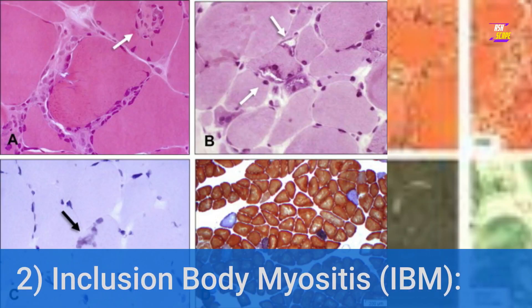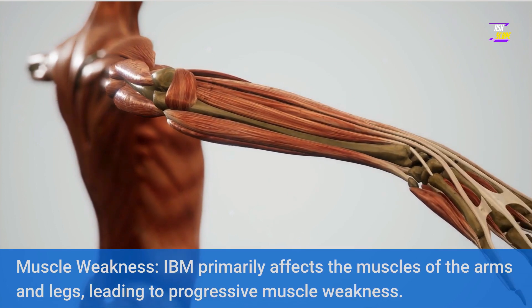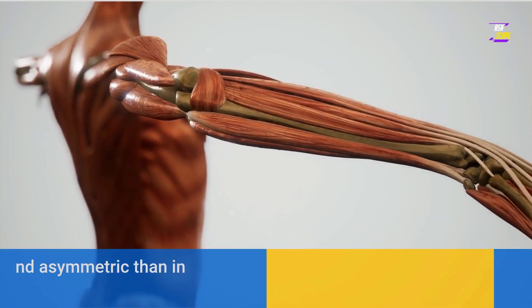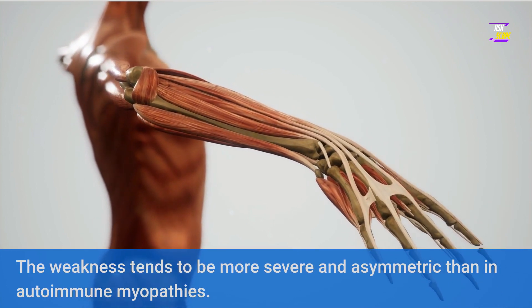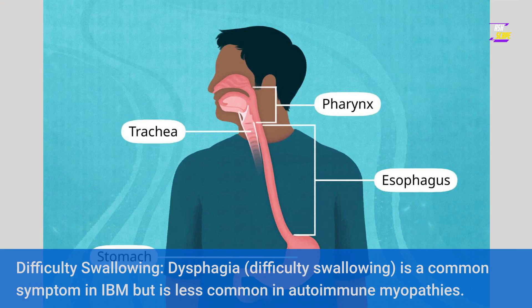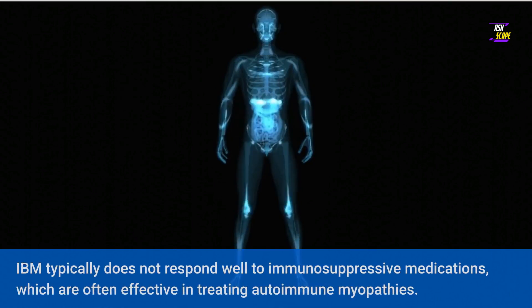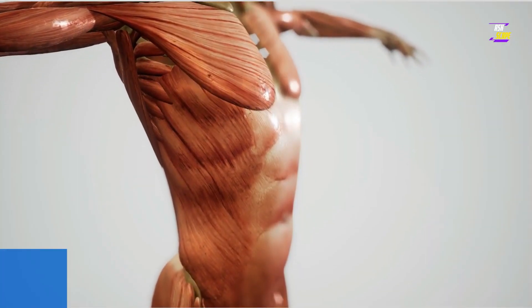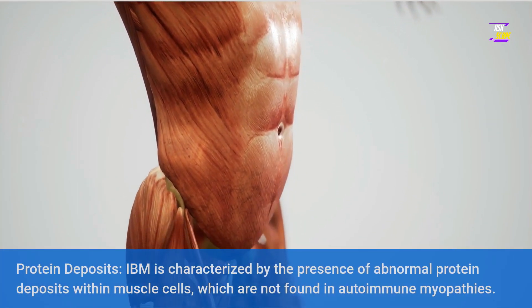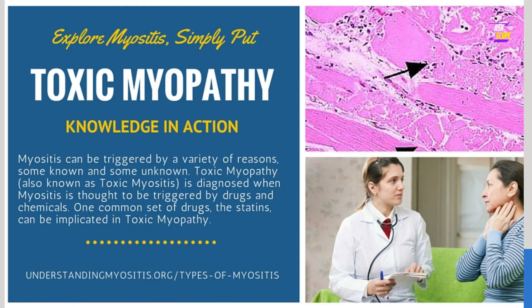2. Inclusion Body Myositis (IBM): IBM primarily affects the muscles of the arms and legs, leading to progressive muscle weakness that tends to be more severe and asymmetric than in autoimmune myopathies. Difficulty swallowing (dysphagia) is a common symptom in IBM but less common in autoimmune myopathies. IBM typically does not respond well to immunosuppressive medications, and is characterized by abnormal protein deposits within muscle cells, which are not found in autoimmune myopathies.